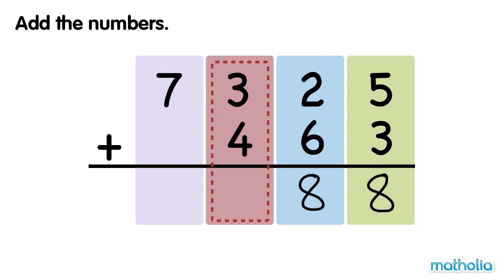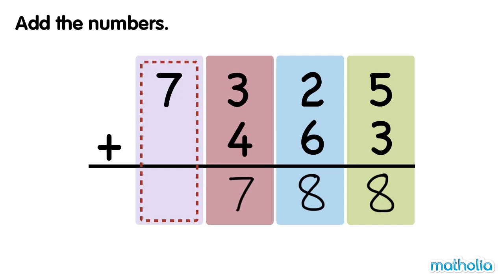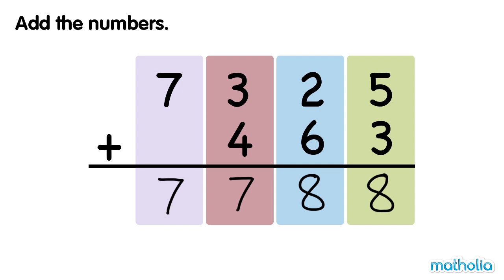3 hundreds plus 4 hundreds equals 7 hundreds. 7,325 plus 463 equals 7,788.